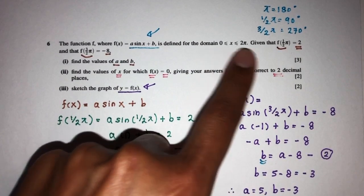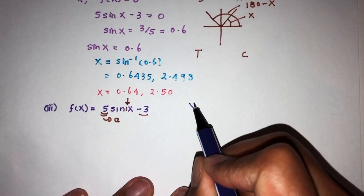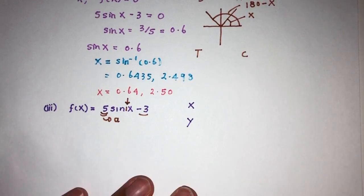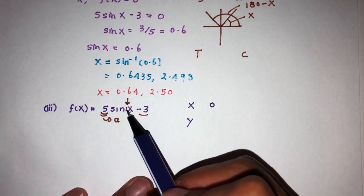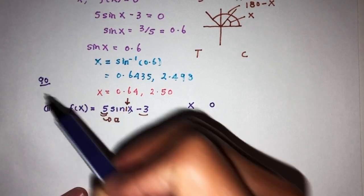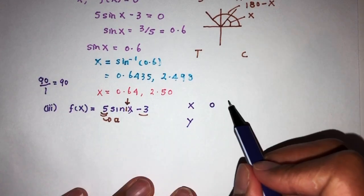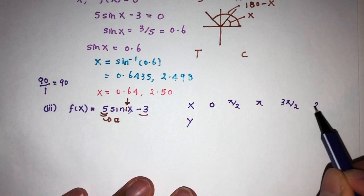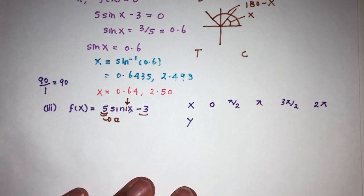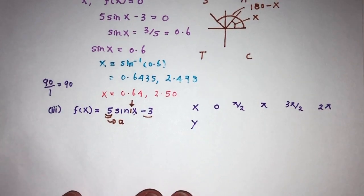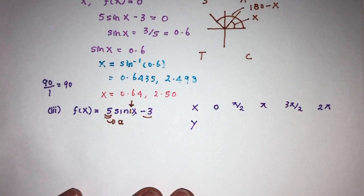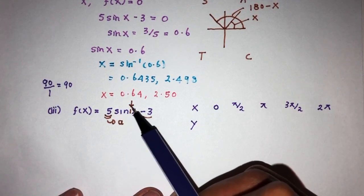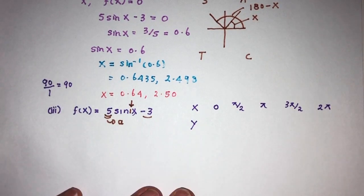The function is defined between 0 and 2 pi. For the table of values, since the coefficient of x is 1, I use an interval of 90 degrees divided by 1, which is 90 degrees, or pi over 2 in radians. This gives x values of 0, pi over 2, pi, 3 pi over 2, and 2 pi. Working with these intervals gives us exact values.